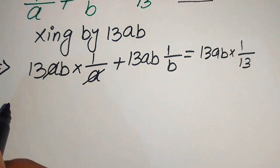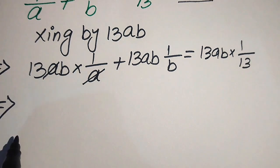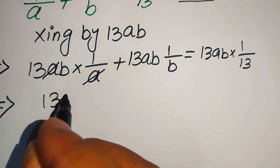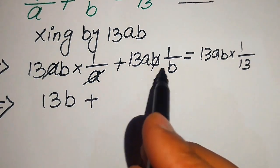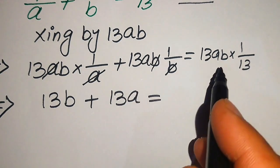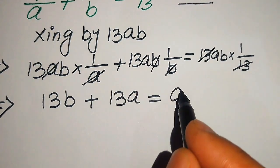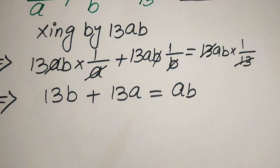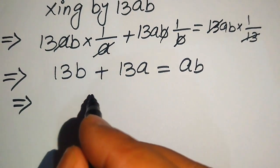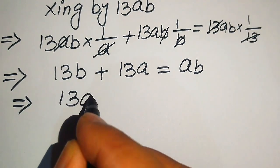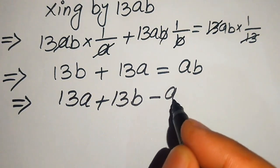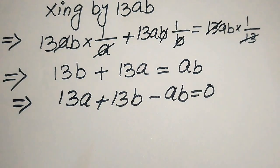The a cancels with a, giving us 13b. Then b cancels with b, giving 13a. On the right side, 13 cancels with 13, leaving ab. So we rearrange and move ab to the left-hand side, getting 13a plus 13b minus ab equals zero.